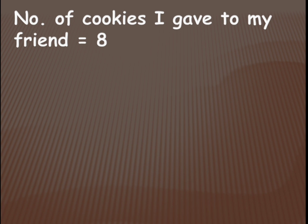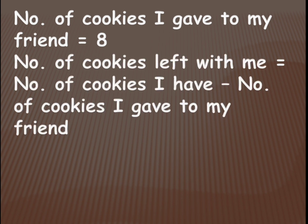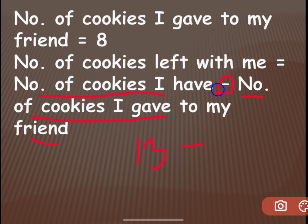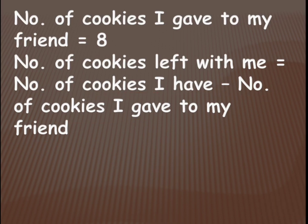How many cookies are left with me? Number of cookies left with me is equal to total number of cookies minus number of cookies I gave to my friend — that is 13 minus 8. From the 13 you had, you gave away 8. Taking away means subtraction, so you do 13 minus 8.